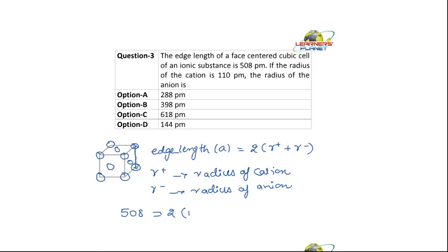It is equal to 2 into radius of cation is given as 110 picometer plus radius of anion. So it would be 508 equals 2 into 110 plus 2R radius of anion. Or your radius of anion would be equal to 508 minus 220. So what it would be?